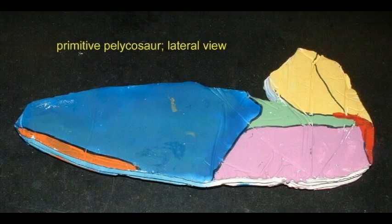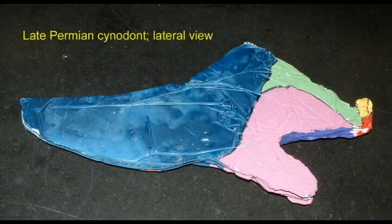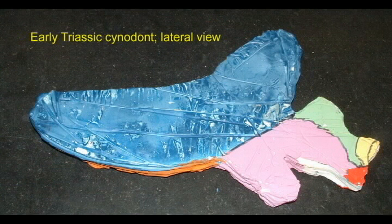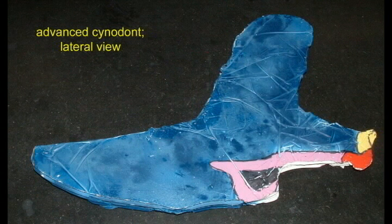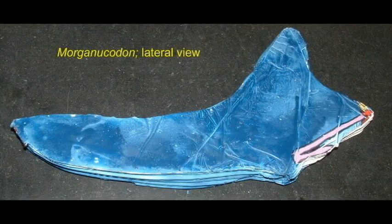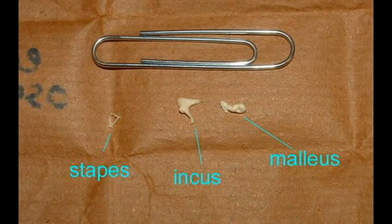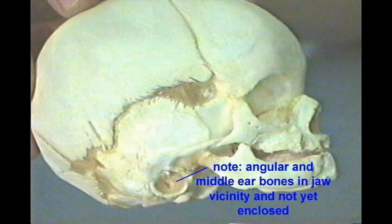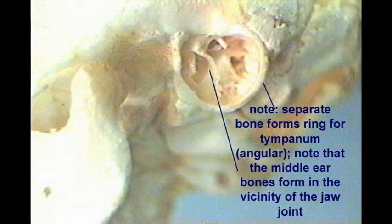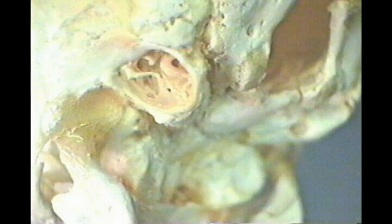In a gradual process lasting tens of millions of years, the bones of the reptilian jaw joint, the quadrate and the articular, became tiny bones which the first mammals incorporated into the middle ear. The angular bone of the lower jaw was also reduced. In human embryos, these bones begin their development in the region of the jaw, and are subsequently incorporated into the ear, where the angular supports the tympanum, and the quadrate and the articular, now called the malleus and incus, function in hearing as middle ear bones.